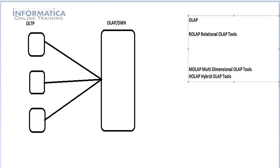So what are relational OLAP tools? We have relational OLAP tools like SAP BO, Hyperion, or OVAE. These are all relational OLAP tools. What happens with relational OLAP tools is that whenever the business user generates reports, the tool queries the data from the database and represents it in the form of reports.